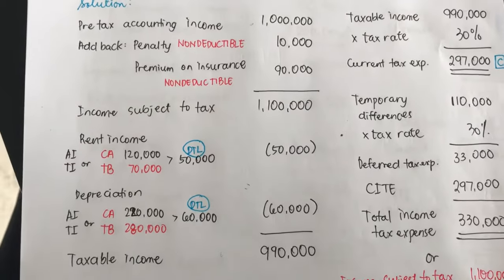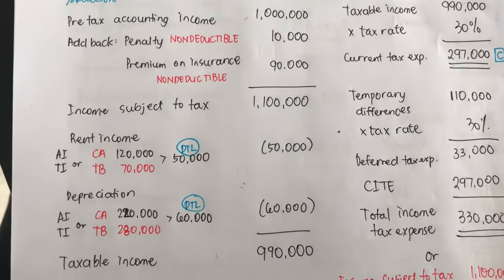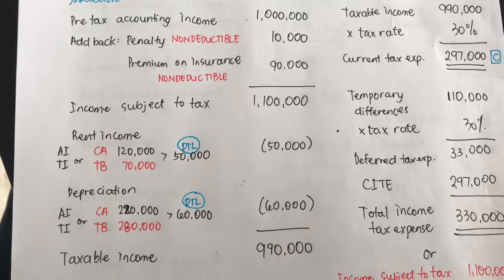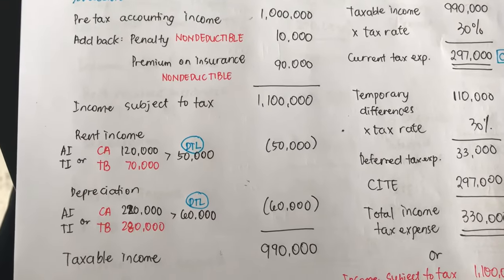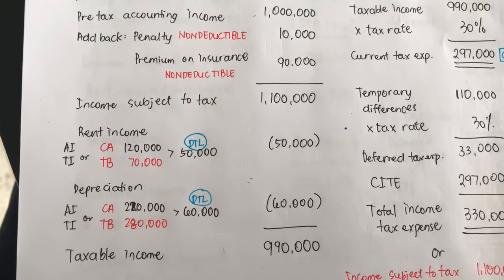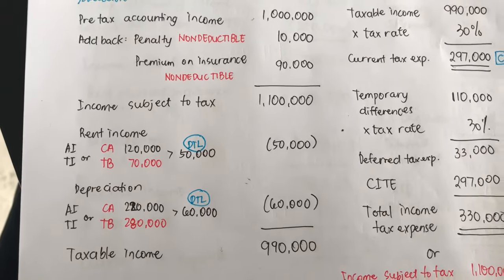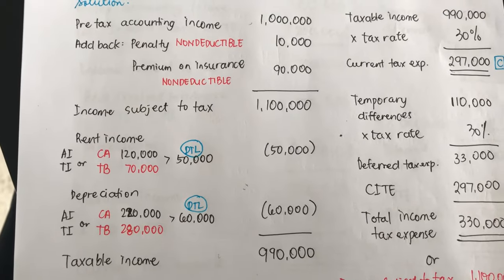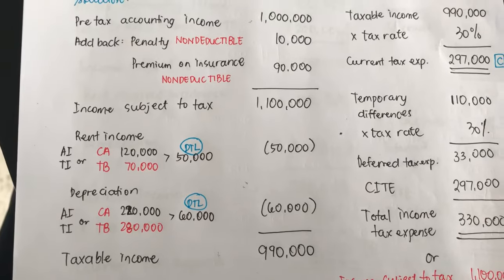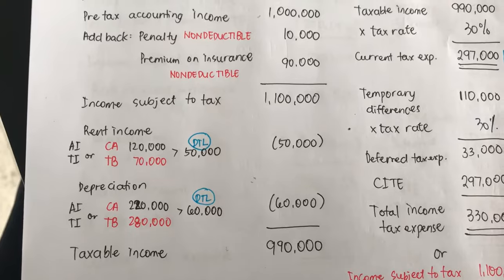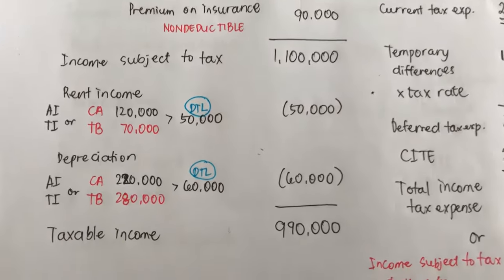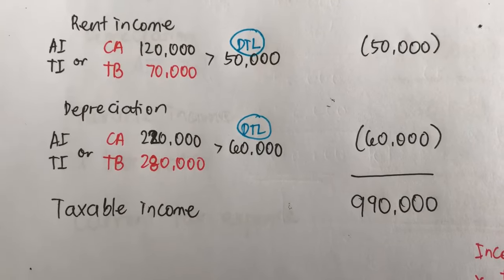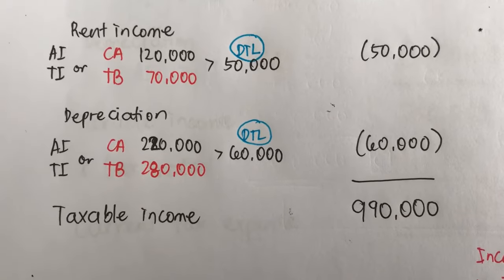Starting with pre-tax accounting income of 1,000,000: add back penalty of 10,000 — because penalties paid cannot be deducted in the tax return — and add back premium on insurance of 90,000, which is also non-deductible. Income subject to tax is 1,100,000. For the temporary difference of rent income: accounting income shows 120,000 but tax return shows only 70,000.